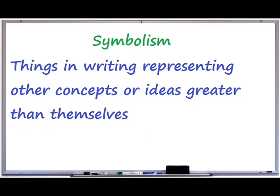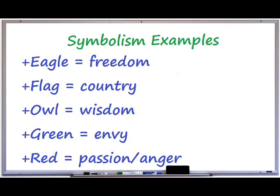Symbolism occurs when things, in writing or elsewhere, represent concepts greater than themselves. Basic symbols include things commonly associated with what they represent, such as flags or logos. It's known that the bald eagle is a symbol of freedom in the United States, that the cross represents Christianity, and that certain signs indicate information to viewers without relying on words. Symbolism in literature can be more subtle than a visual representation, and it's up to the reader to consider what the author may be including and for what reasons.